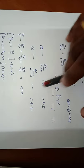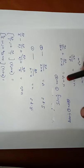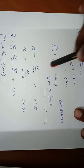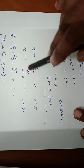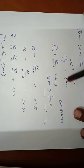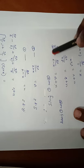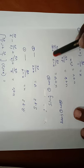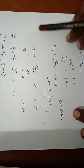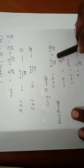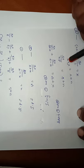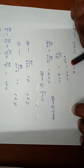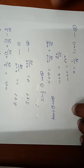Solving these two equations by adding them: u plus v equals x minus y by root 2 plus x plus y by root 2. The y terms cancel, leaving 2x by root 2, which simplifies to root 2 times x. Therefore x equals 1 by root 2 into u plus v — this is equation number 3.